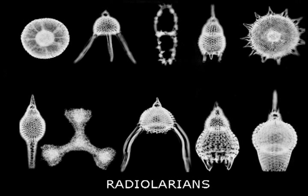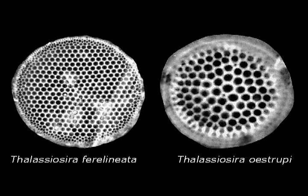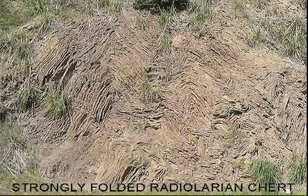Nevertheless, diatoms and radiolarians share one basic feature. Both construct skeletons of silica, a hydrated form of silicon dioxide called opal, a mineral highly resistant to erosion, so readily fossilizable, but easily altered by heat and pressure to chert, cryptocrystalline quartz.